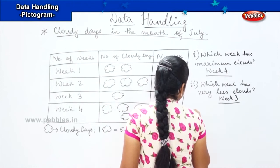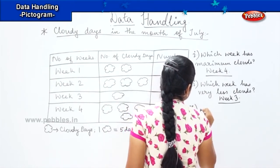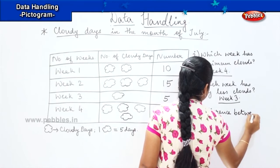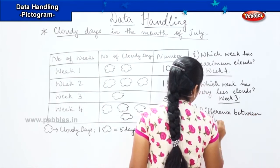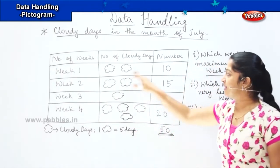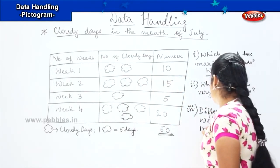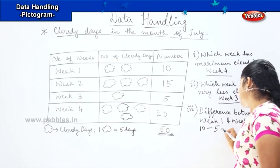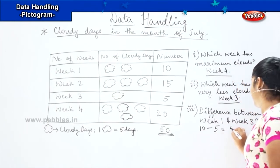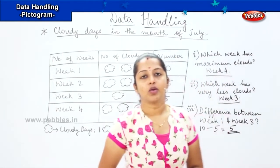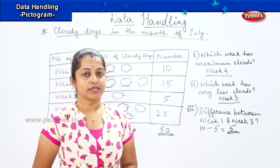The next question is: what is the difference between week one and week three? Week one has ten cloudy days and week three has five cloudy days. So the difference is ten minus five equals five. You have a difference of five clouds between week one and week three. Is this pattern clear, children? Are you clear with the pictogram format?